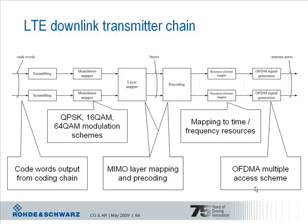After scrambling and modulation of the codewords, the MIMO layer mapping and precoding takes place. That is the stage where it is decided whether transmit diversity or spatial multiplexing is applied, which would result in a different mapping and precoding operation specific to each MIMO mode. A wide range of configuration options exist at this stage, with different precoding types depending on the radio channel characteristics. Then the resulting signal out of the MIMO precoder is mapped on the OFDM time-frequency resources for transmission on each antenna port. LTE supports up to four transmit antennas at the base station.